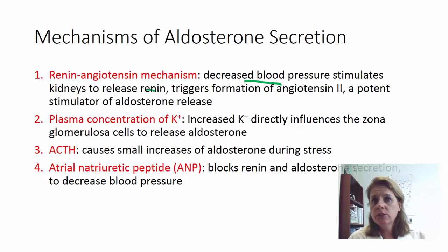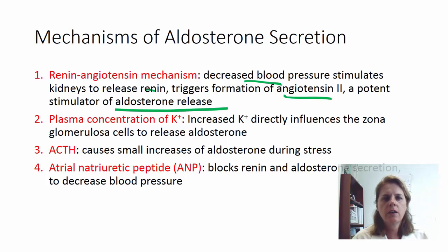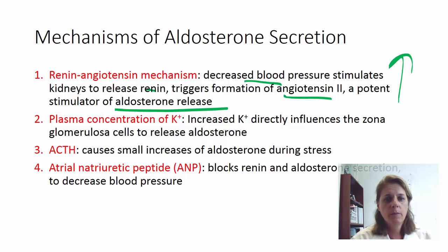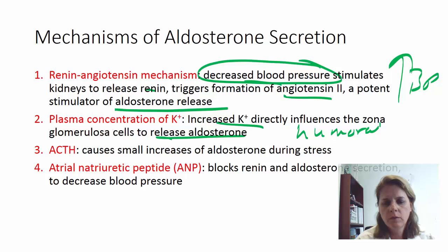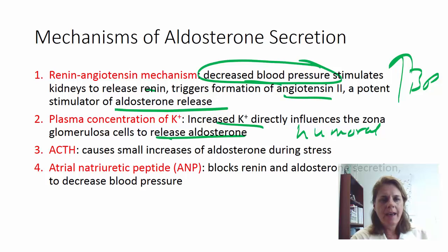Angiotensin 2 stimulates the release of aldosterone, which causes you to reabsorb sodium and hold on to water, raising blood pressure back up. Additionally, high levels of potassium in the blood will directly stimulate the zona glomerulosa to release aldosterone — that's a humoral response. ACTH causes small amounts of aldosterone to be released during stress as well.